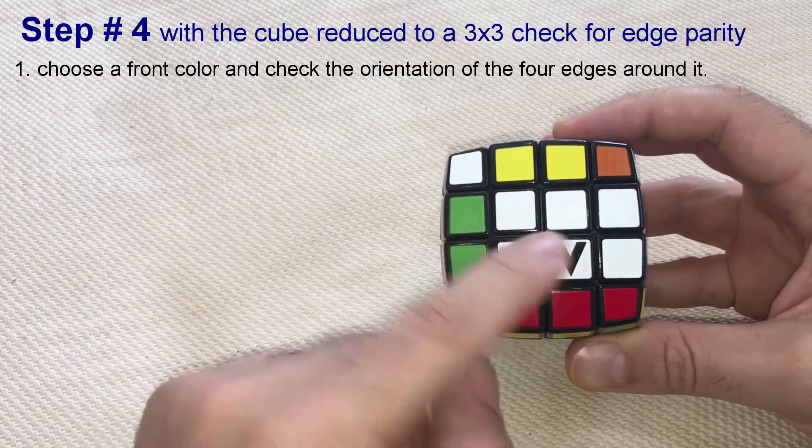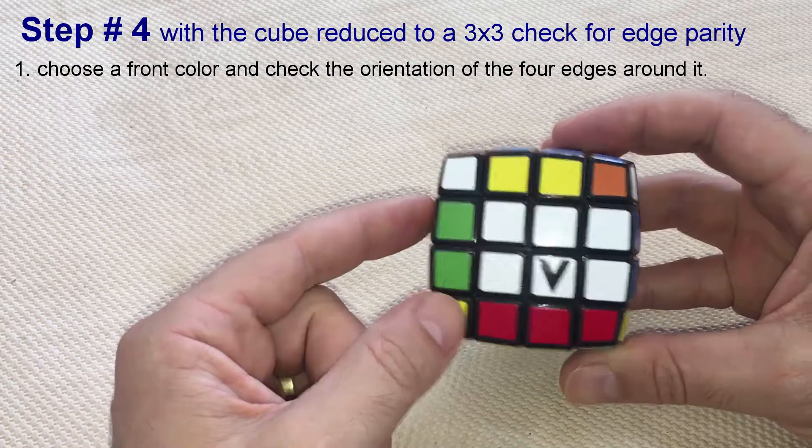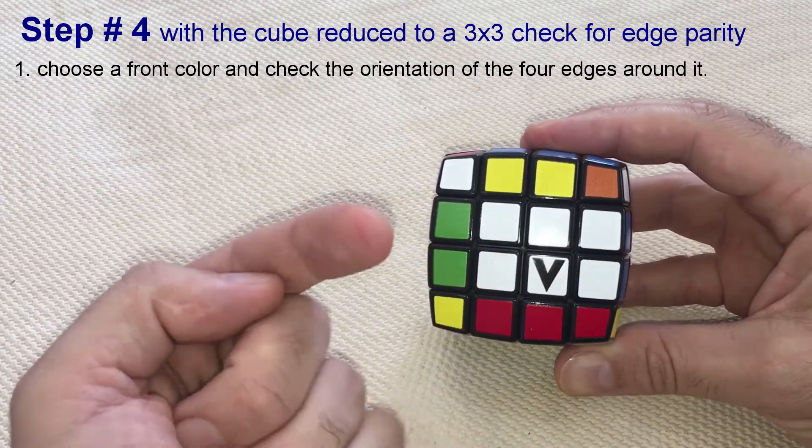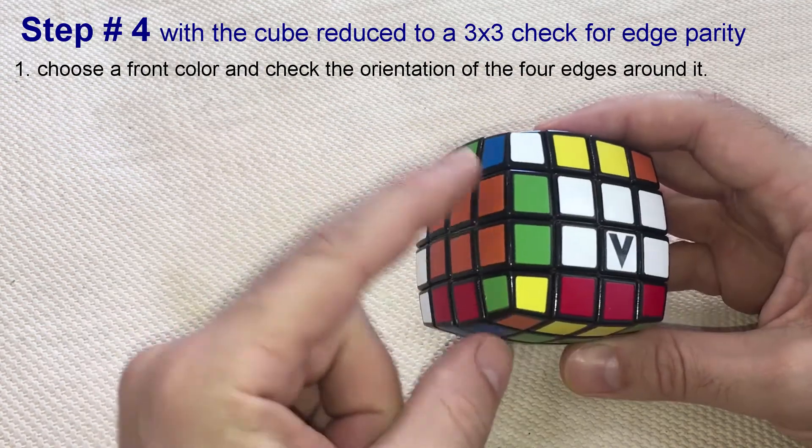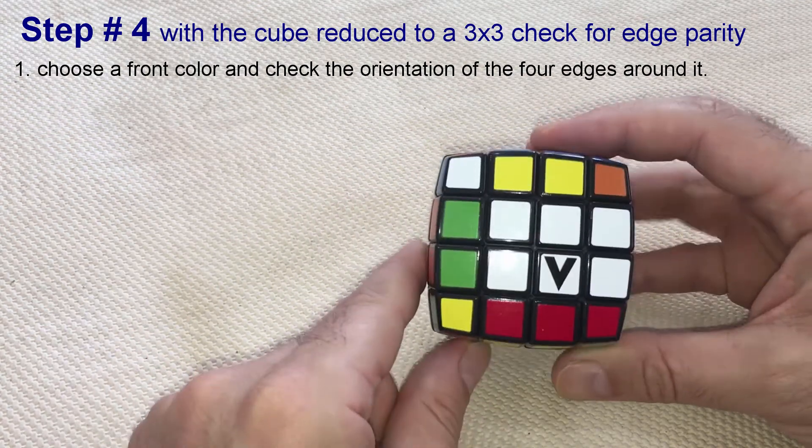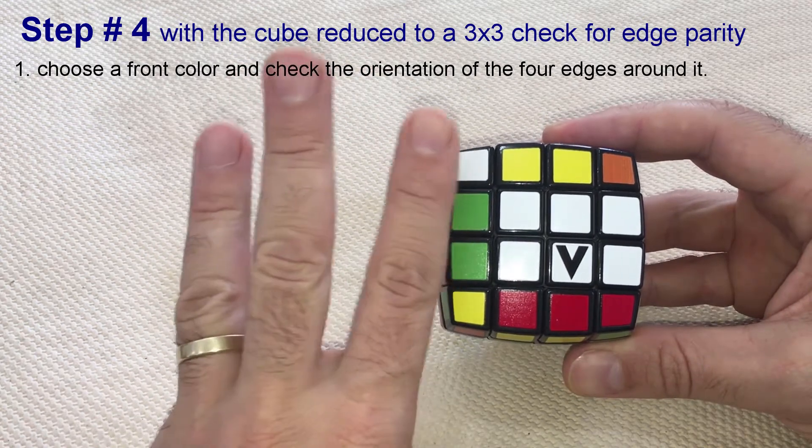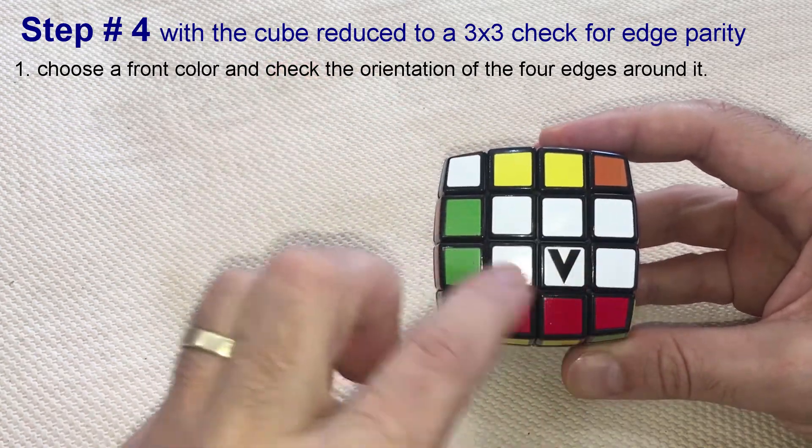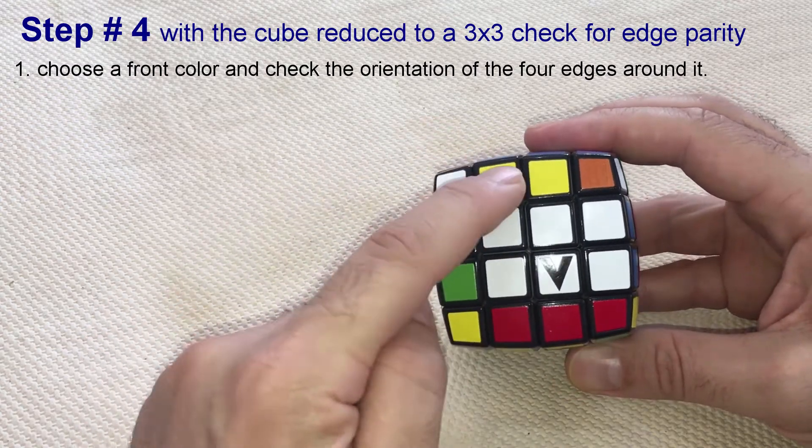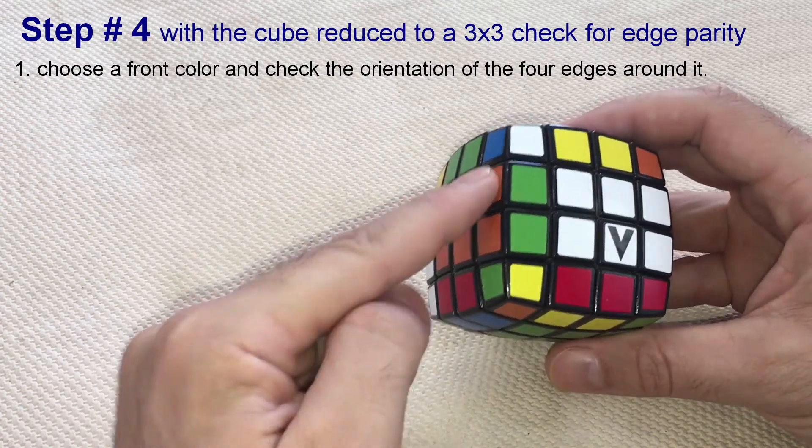Now, starting with the white front facing you, count as good edges the ones with white or yellow facing you, and the ones with orange or red facing aside. We have three good edges in the front face: this white facing you, this yellow facing you, and this orange facing aside.